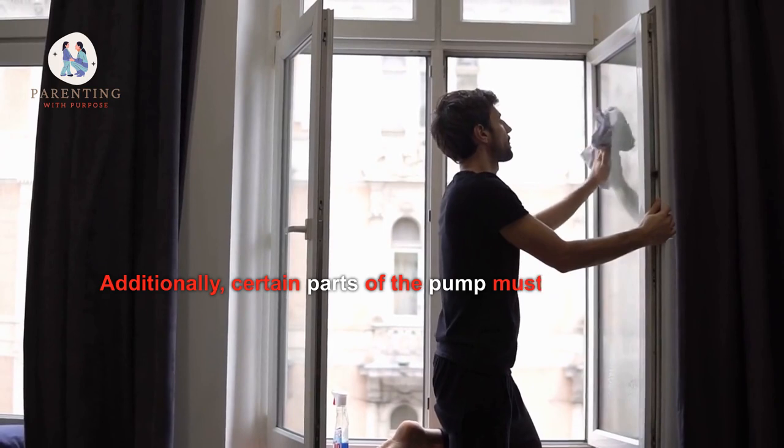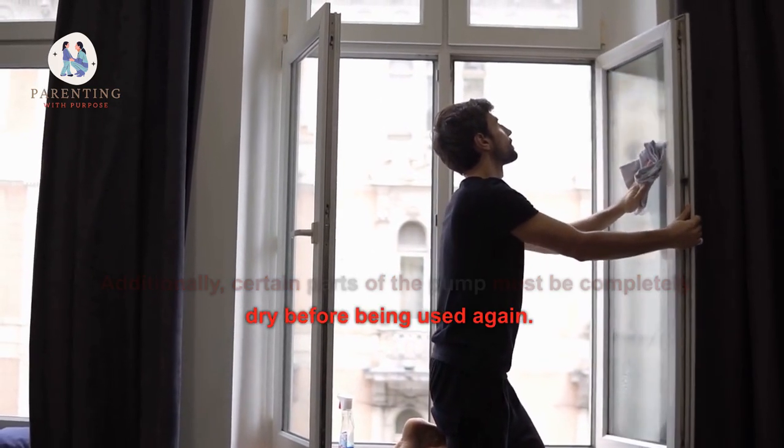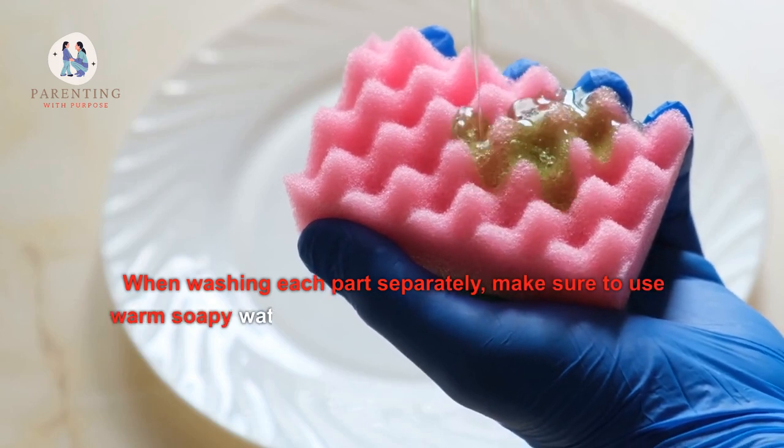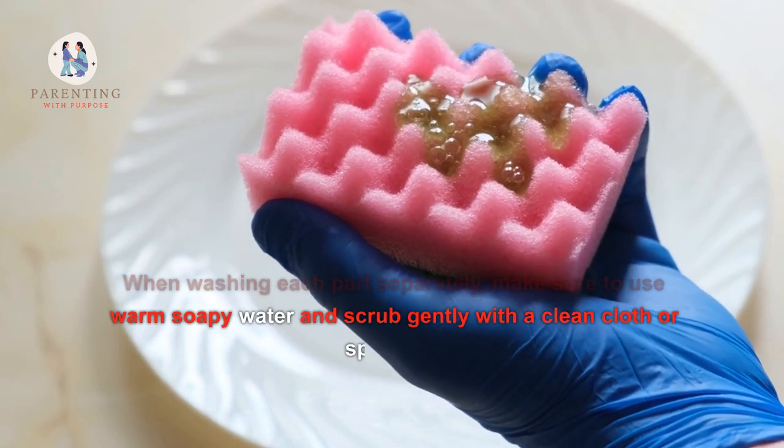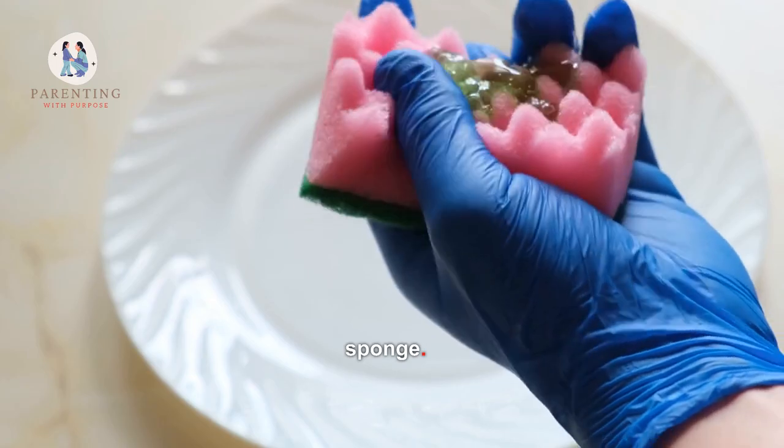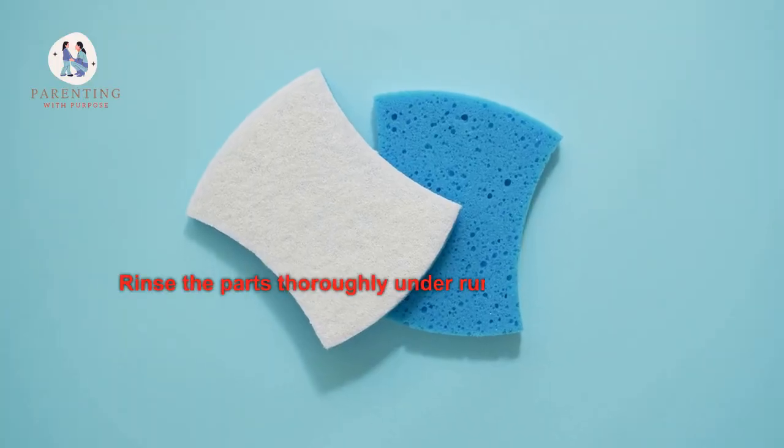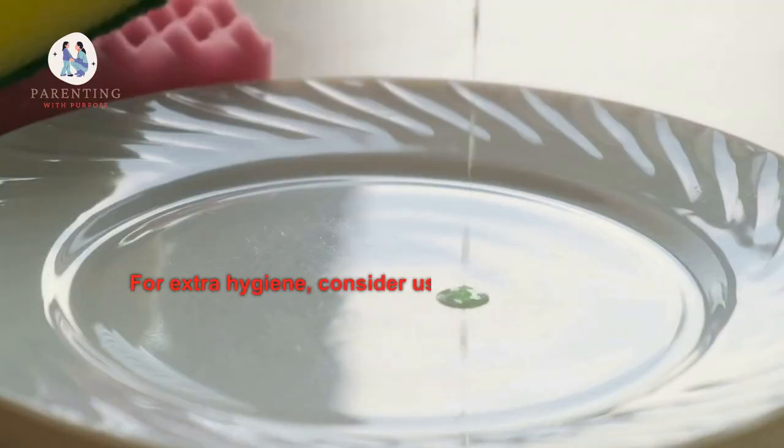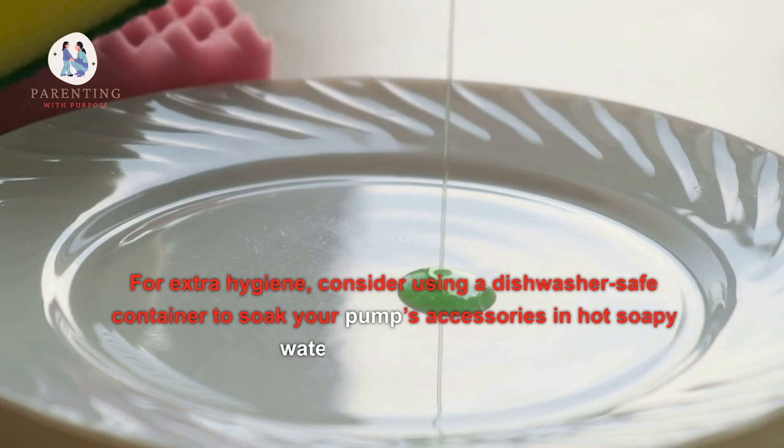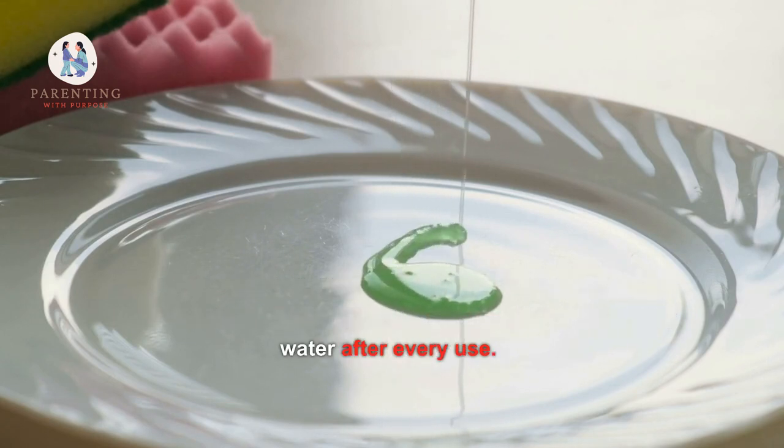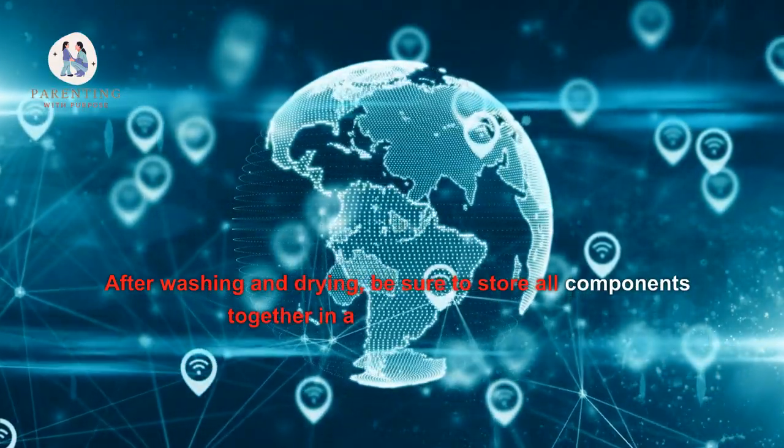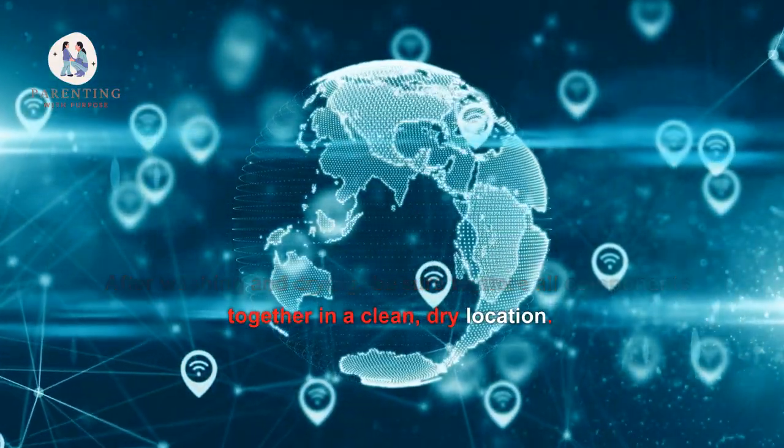Additionally, certain parts of the pump must be completely dry before being used again. When washing each part separately, make sure to use warm soapy water and scrub gently with a clean cloth or sponge. Rinse the parts thoroughly under running water before air drying them on a clean surface. For extra hygiene, consider using a dishwasher-safe container to soak your pump's accessories in hot soapy water after every use. After washing and drying, be sure to store all components together in a clean, dry location.